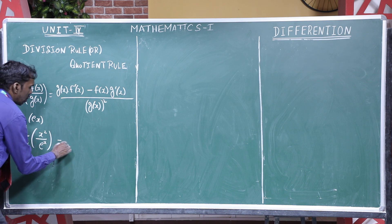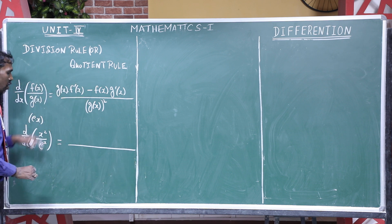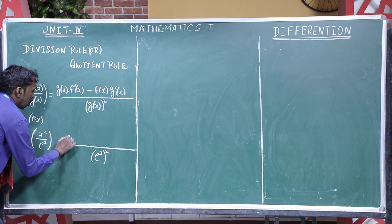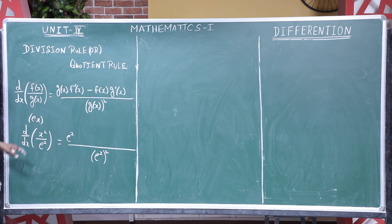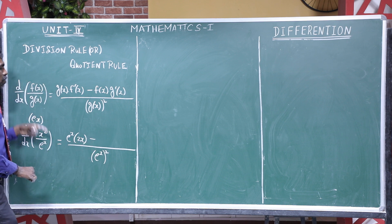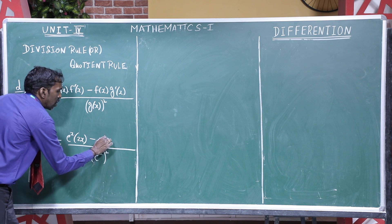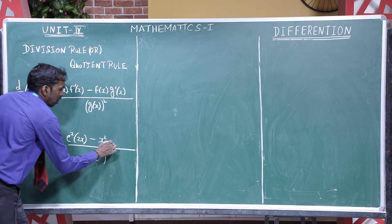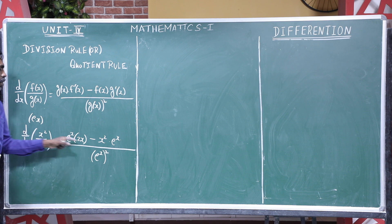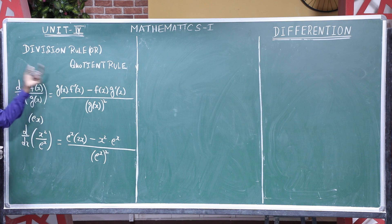Substituting into the formula: denominator is eˣ whole squared. Then eˣ multiplied by the derivative of f(x), which is the derivative of x² = 2x, minus f(x) = x² multiplied by g'(x) = eˣ. This is the u/v rule, also called the coefficient rule or division rule. The formula is: (v·u' − u·v') / v². You can use any variables — f(x), g(x), or u/v.